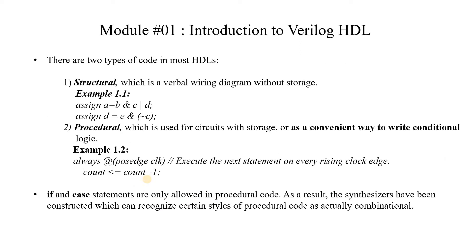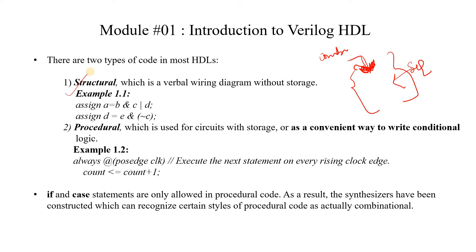There are two types of code in most HDLs. The first is structural code, which is used to model combinational circuits. To code the combinational logic in our design, we mostly use structural code. For the sequential portion — like flip-flops or storage elements — we use procedural code. In structural code we use the assign statement, while in procedural code we use the always keyword in Verilog.